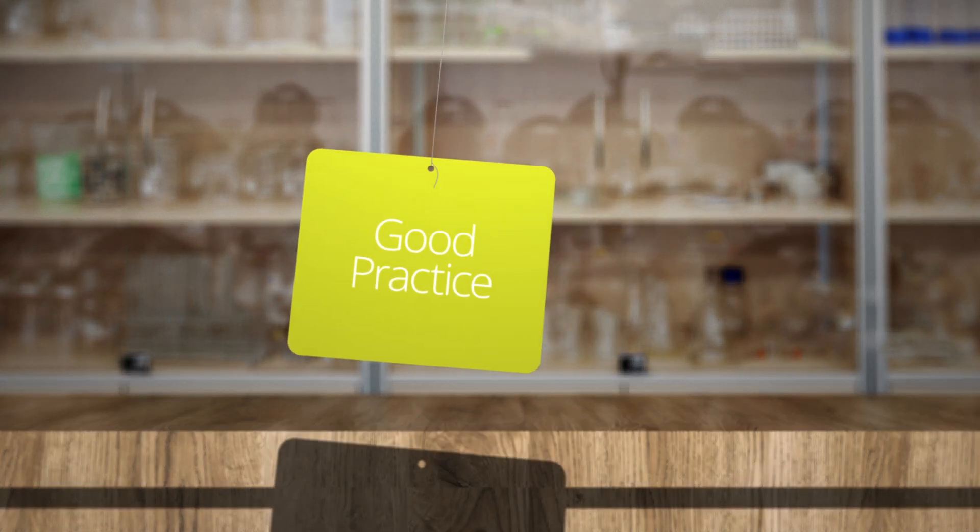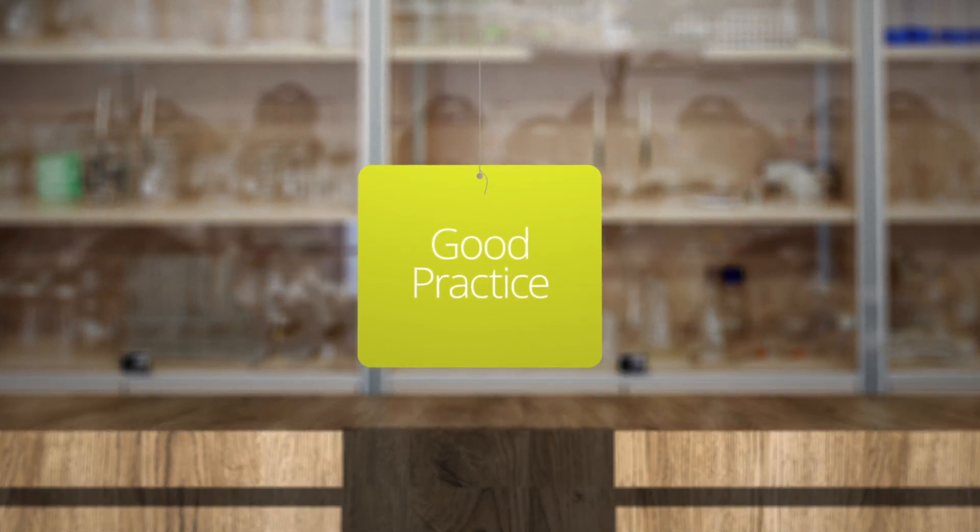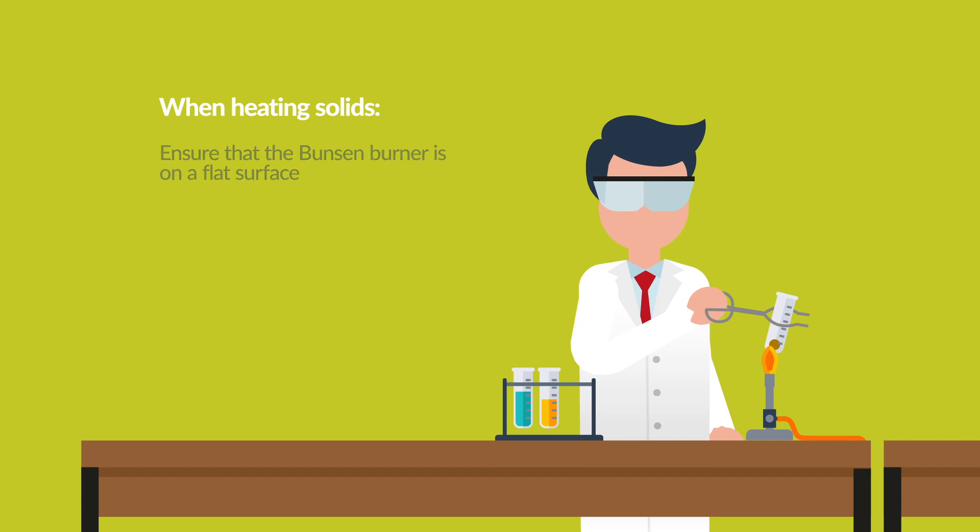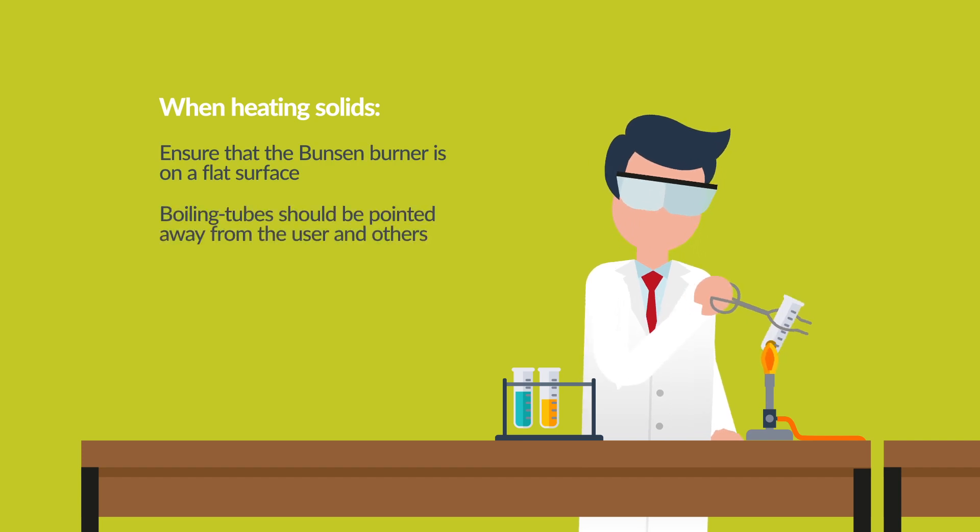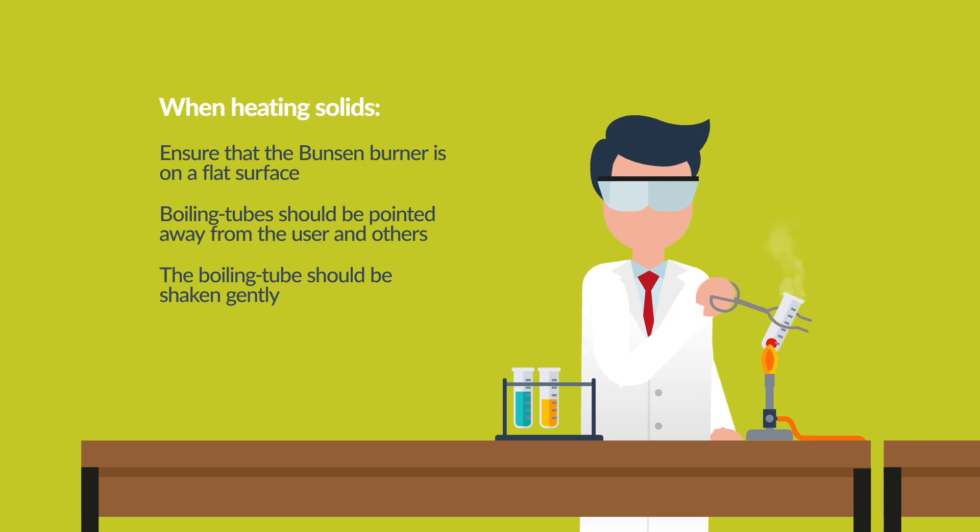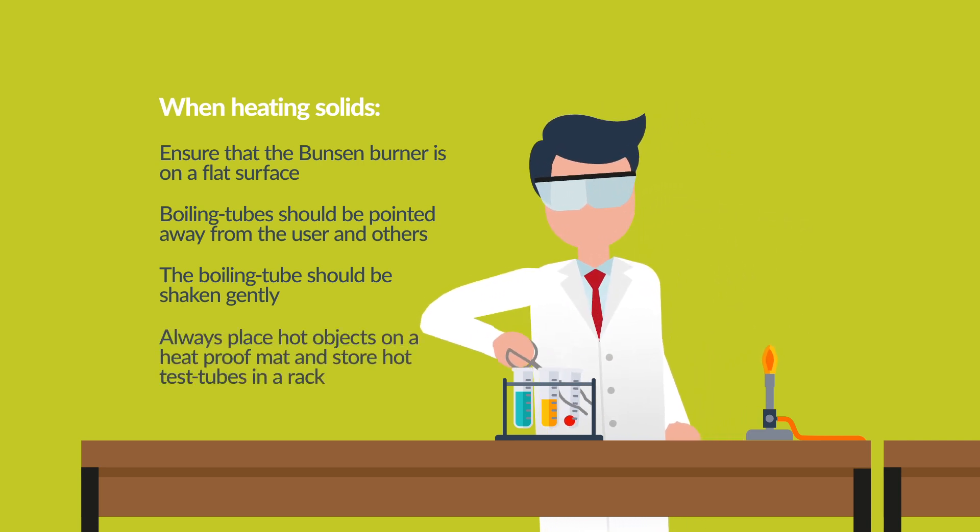Now, here are some examples of good practice when working in the lab. When heating solids, ensure that the Bunsen burner is on a flat surface. Boiling tubes should be pointed away from the user and others. The boiling tube should be shaken gently as this prevents the contents from shooting out. Always place hot objects on a heat proof mat and store hot test tubes in a rack.